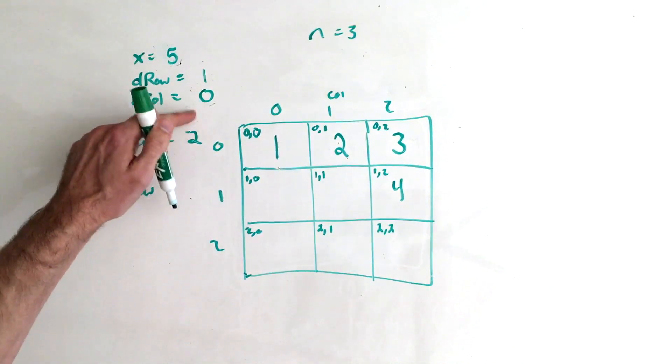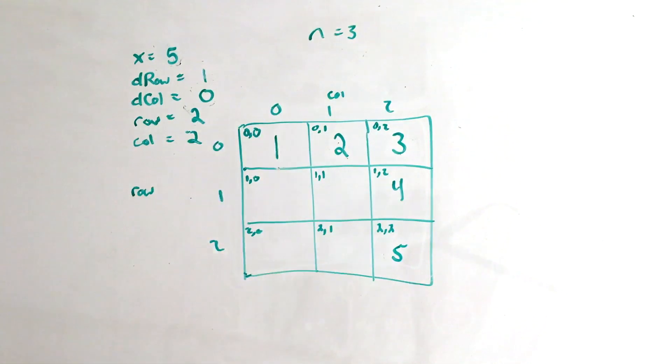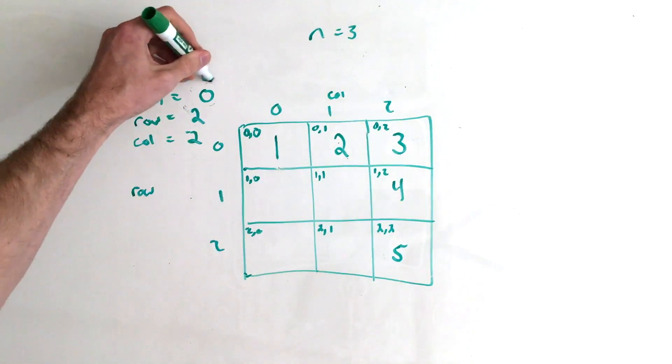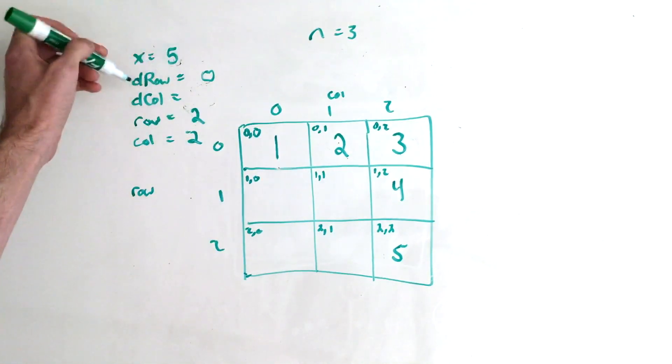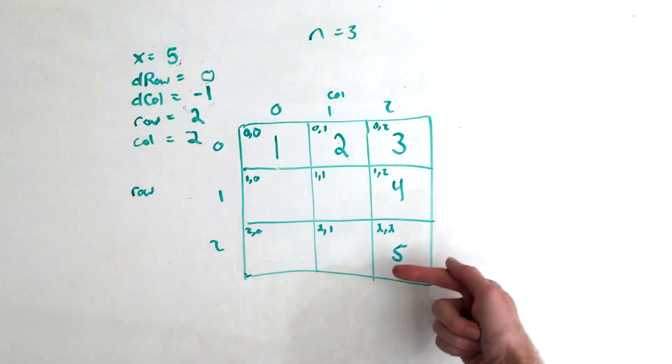Increment x, we're at 2, 2, again, place the value. And then if we were to move in that same direction one more time, we'd go out of bounds, which means we need to do that same operation where we switch these. So drow will become 0, which will become the value of whatever dcolumn was. dcolumn is going to be equal to what drow was, which was 1, but then negate it, which allows us to go left.